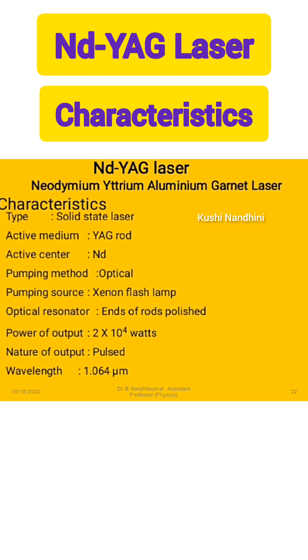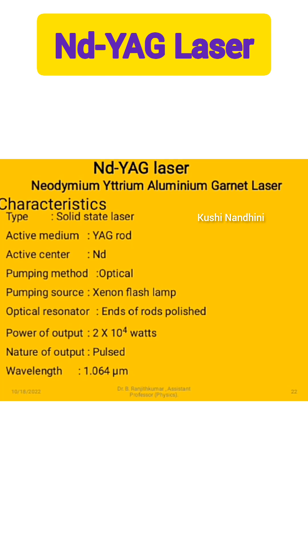Optical resonator: ends of the rod are polished with silver. Power of output: 2 × 10⁴ watts. Nature of output: pulsed. Wavelength: 1.064 micrometers.